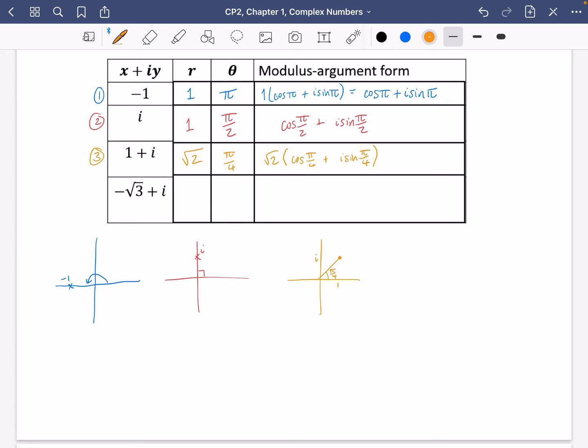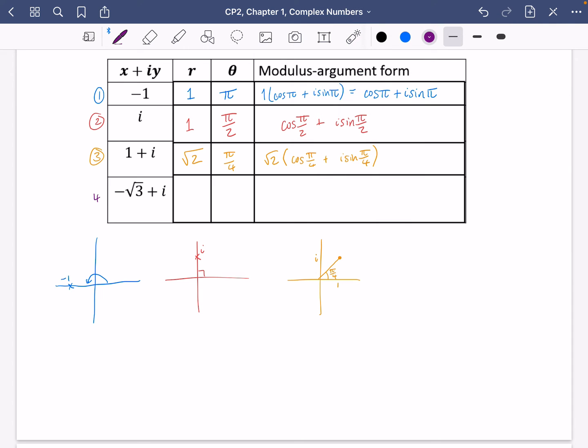For our last one, which I'm going to do in purple, we've got minus root three plus i. Let's do a slightly bigger diagram for this one. So it's over here is minus root three and it's up here with plus i. We're going to try and find out what the angles are going to be here and what the length of the line is. The length of the line is going to be doing Pythagoras to this. So it's going to be the square root of (root three squared plus one squared).